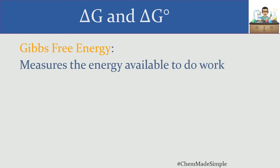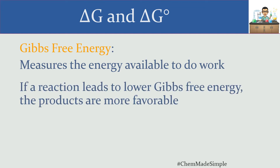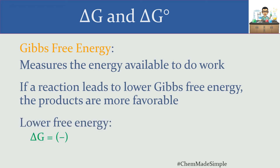The Gibbs free energy change is a measurement of how much energy there is available as a result of a reaction happening to be able to do work. If a reaction leads to a decrease in the Gibbs free energy change, it means that the products are more favorable. Lower energy means more stability, so if our reaction leads to a lower Gibbs free energy than before, it means that reaction is favorable and we will very likely form products.